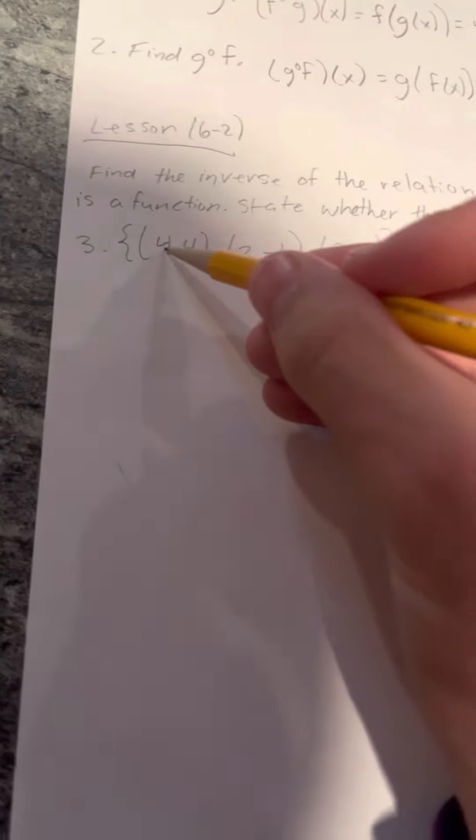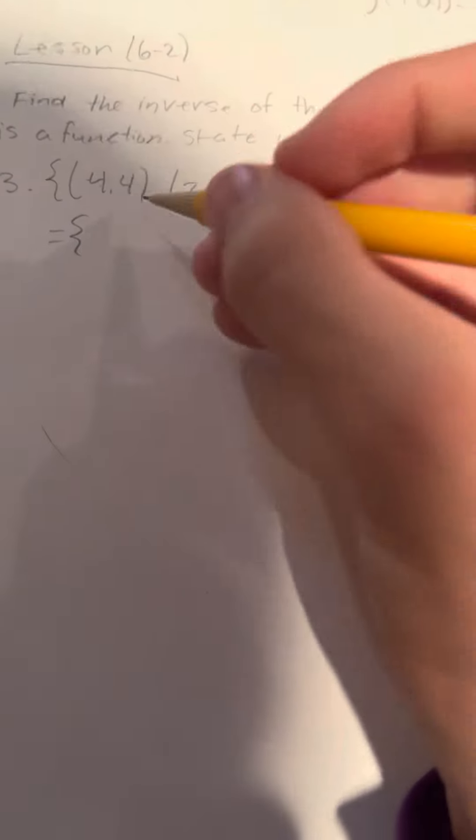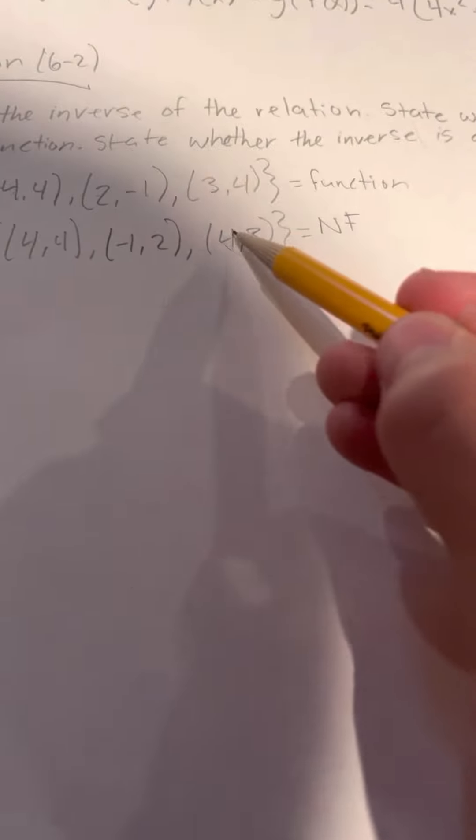We have to state whether the relation is a function. This is a function because none of the first numbers repeat. The inverse is just these numbers flipped. So (4,4) stays the same. (2,-1) becomes (-1, 2). And (3,4) becomes (4, 3). This is not a function because there's a 4 appearing twice as the first element — (4,4) and (4,3). So the inverse is not a function.